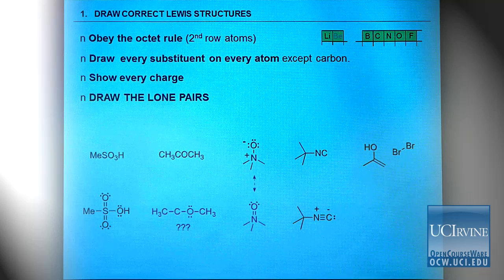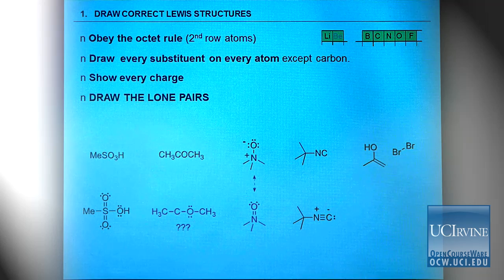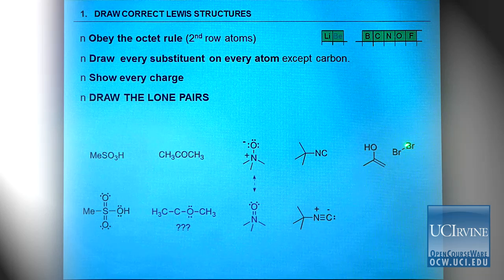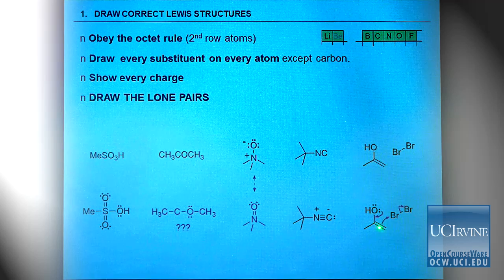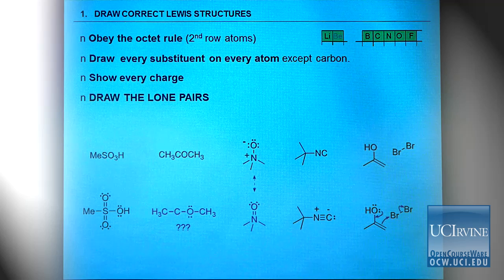Most importantly: draw your lone pairs. Ninety-five percent of all organic arrow pushing starts with a lone pair. For example, when an enol ether alkene reacts with bromine, the reaction doesn't start with oxygen-bromine bond formation. But drawing the lone pairs on oxygen explains why the double bond is so reactive—the lone pair donates into the pi star orbital, making the alkene very nucleophilic, driving an extremely fast reaction.